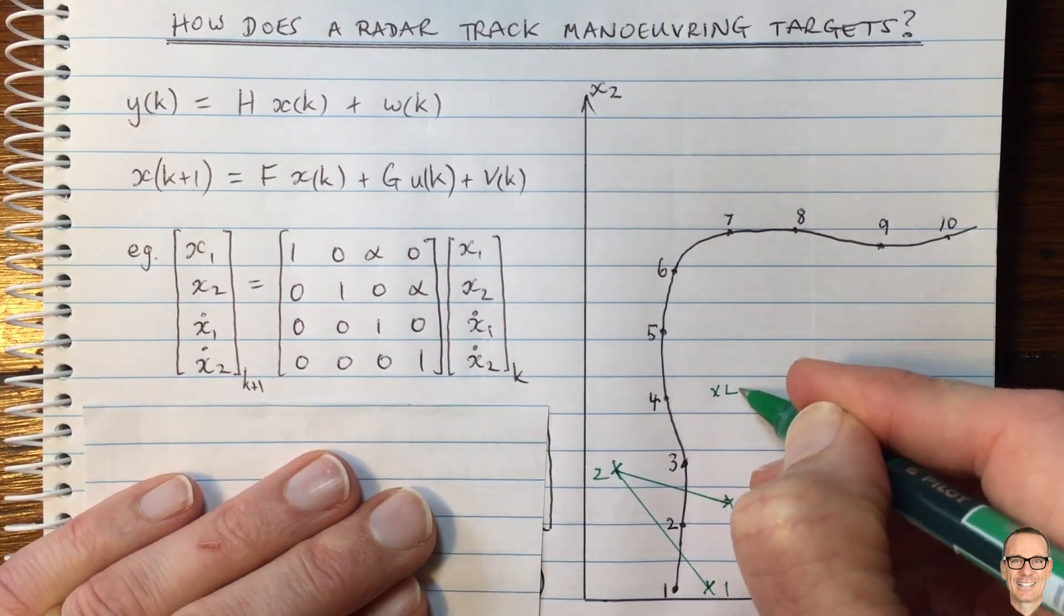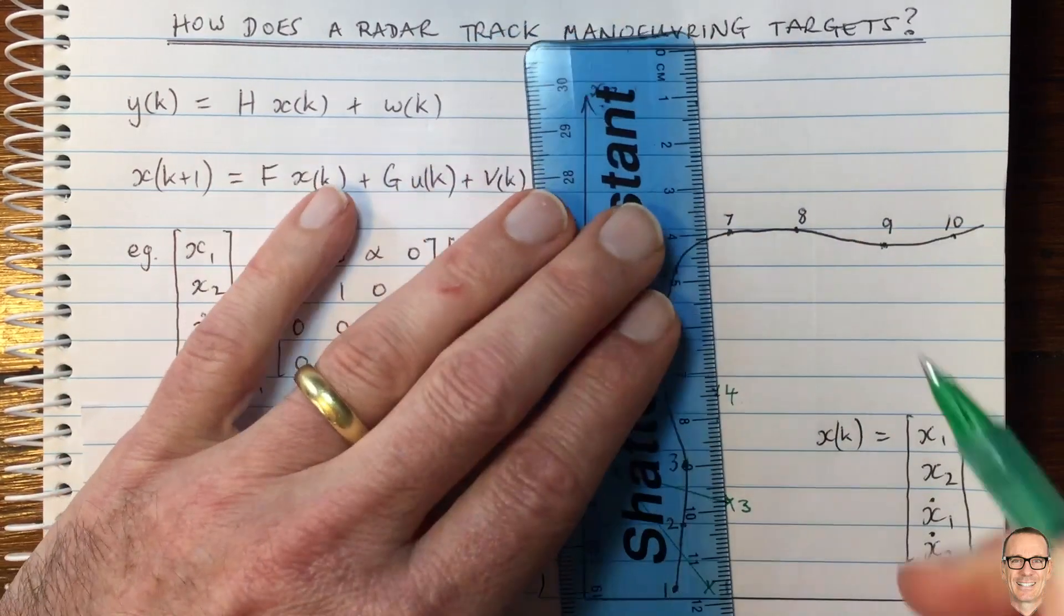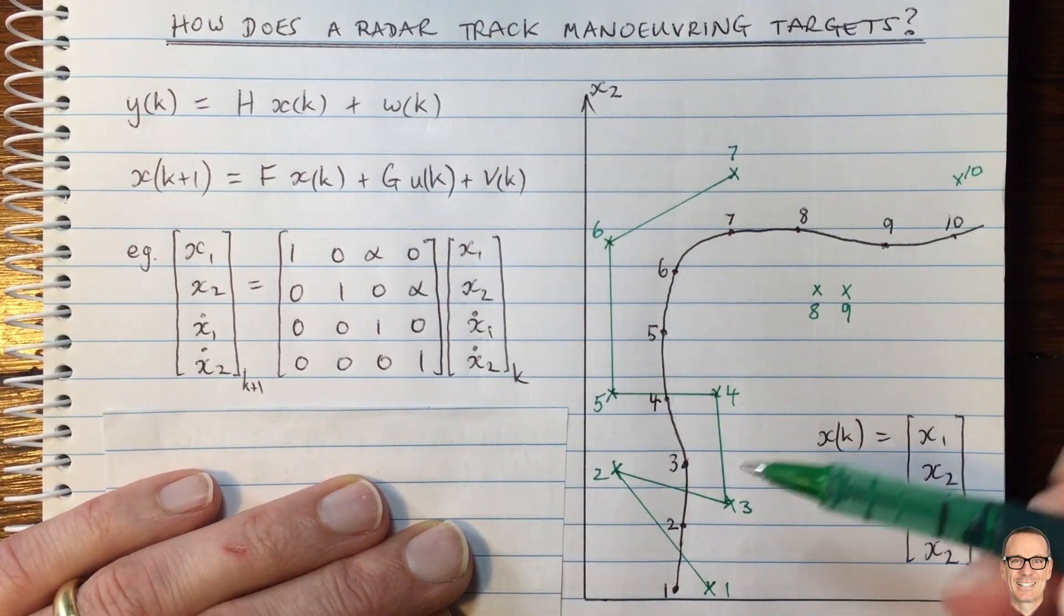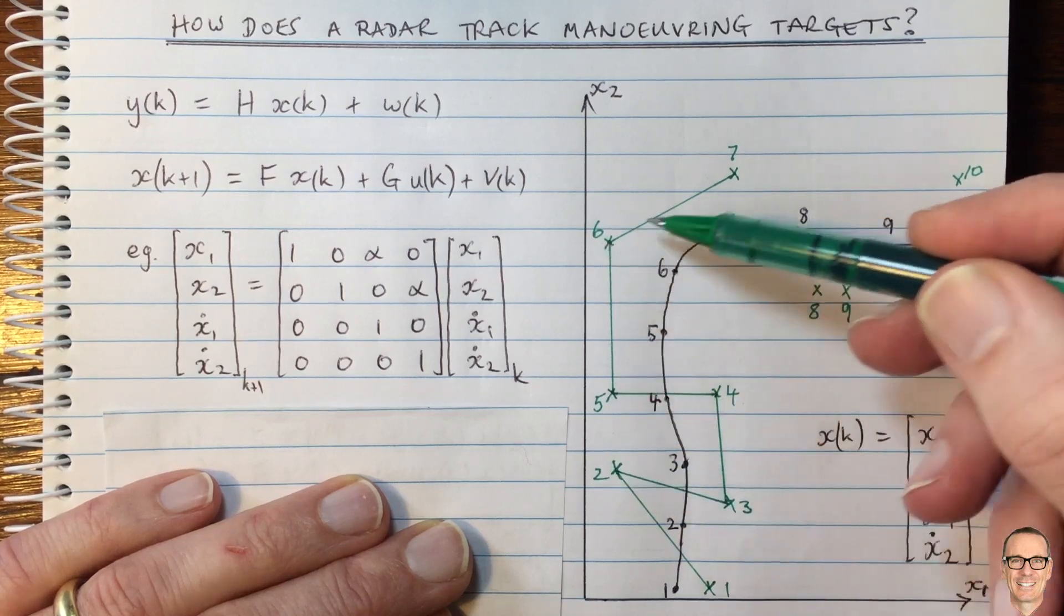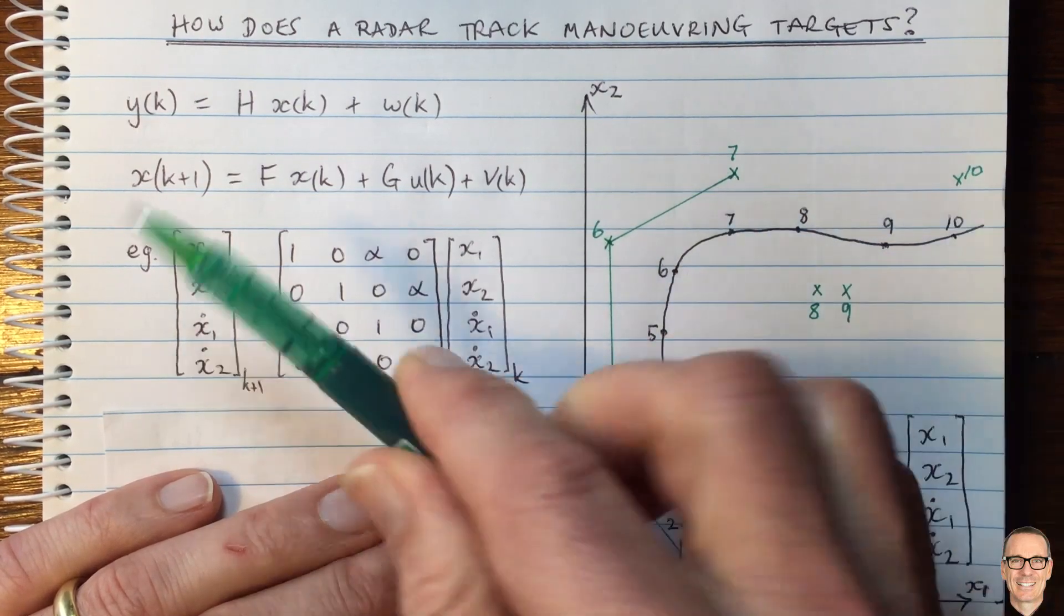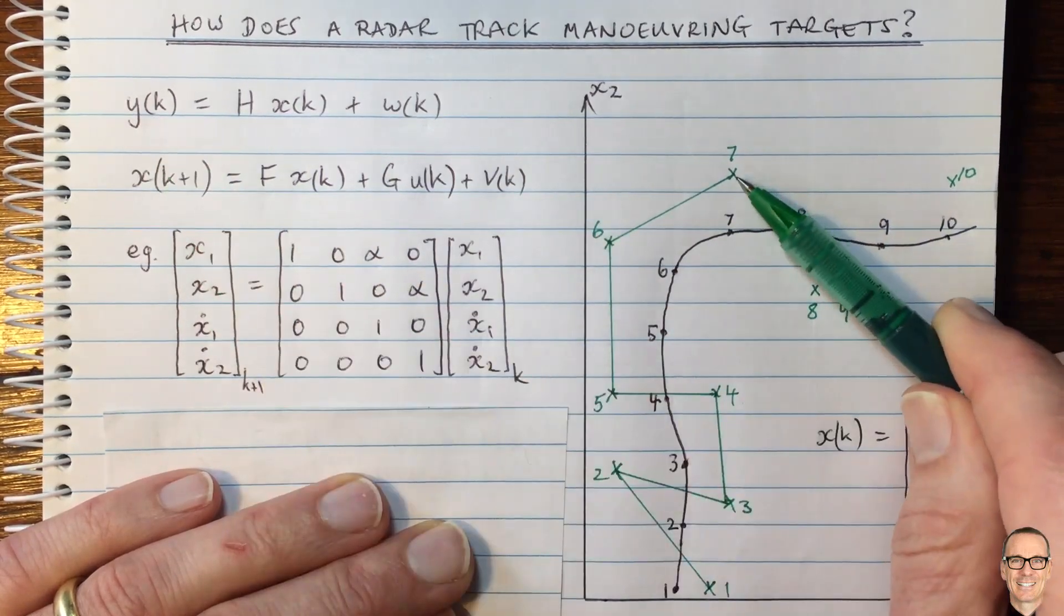Then we would think that our path was quite a strange path with lots of turns and sharp turns. Let's say the fourth measurement was here, for example, and so on. And now I've shown some other measurements all the way up to 10. I've drawn in the path that would be the estimate of the location if we only looked at the measurements up to measurement seven.